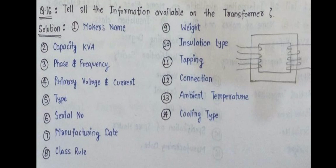What are the information that can be seen on the nameplate of a transformer? First, manufacturer's name or maker's name, manufacturer's date, capacity in kVA, phase and frequency, then primary voltage and current, then type, serial number, classification society, weight, installation type, tapping, correction, ambient temperature, and cooling type.